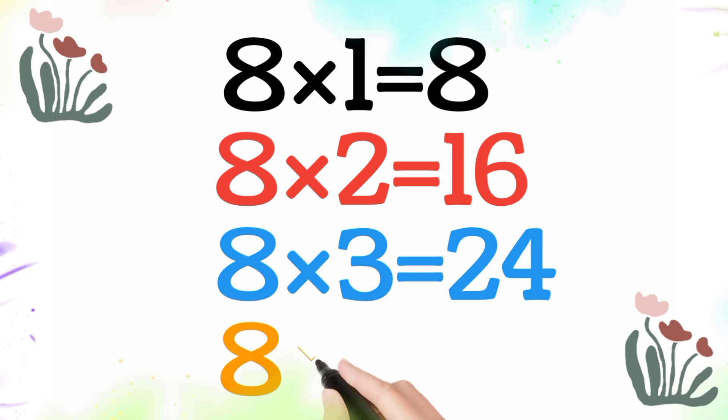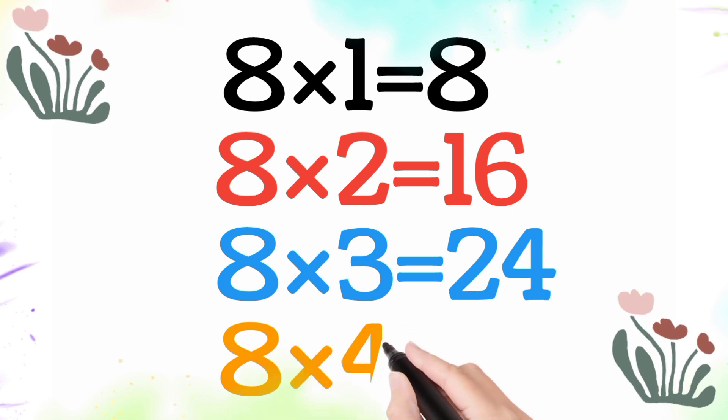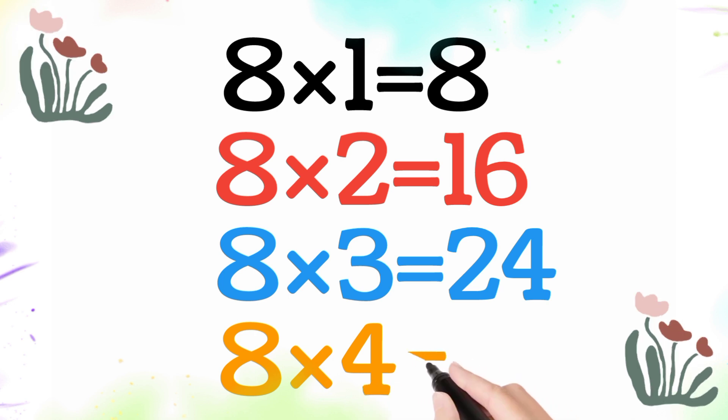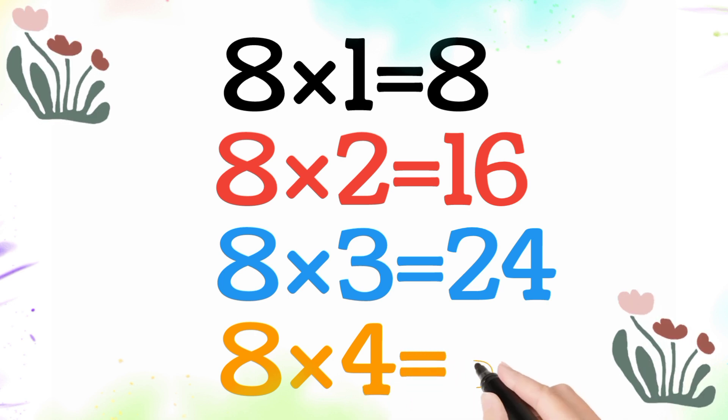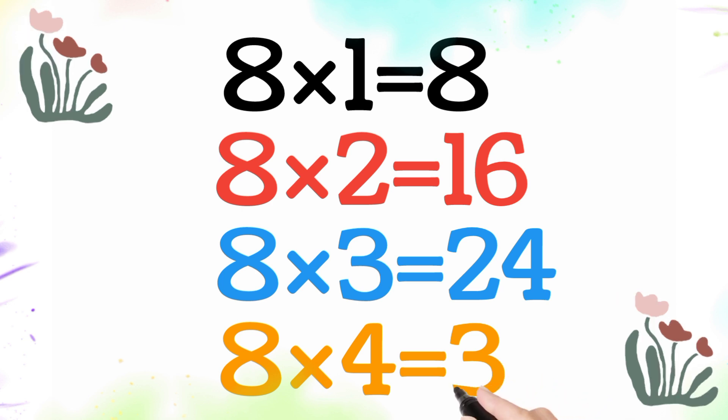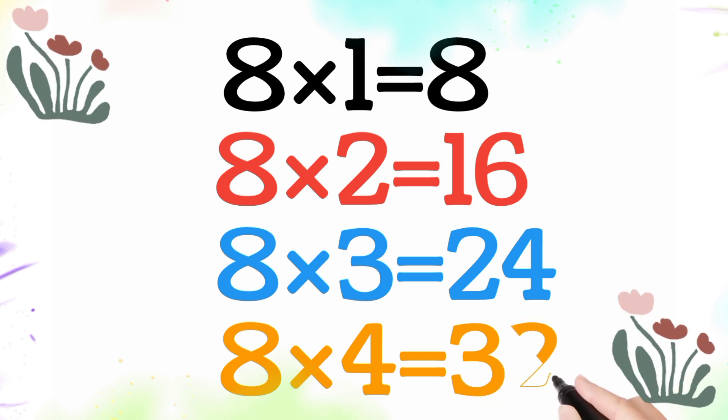8 multiplied by 4 is equal 32. So 8 times 4 is 32.